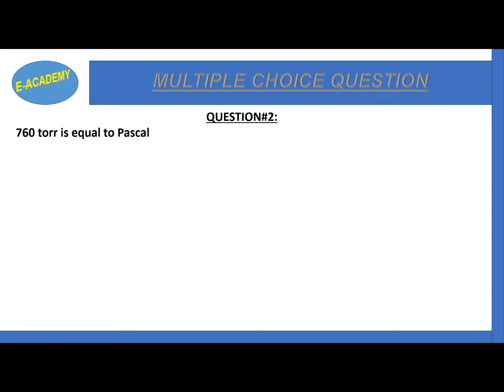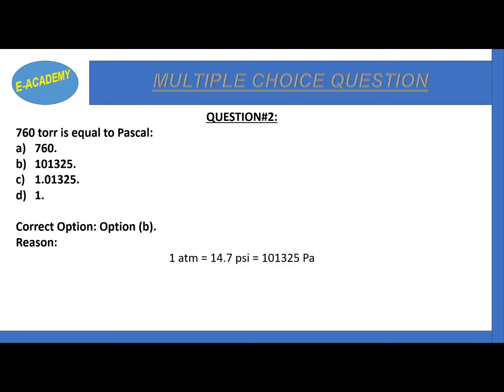Question number 2: 760 torr is equal to how many pascal? 1 atm is equal to 14.7 psi, and 14.7 psi is equal to 101,325 pascal.